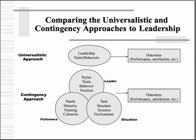You look at the leader — the styles, the traits, the behaviors, and also position power. You look at the followers: what are their needs, what is their maturity, what is their training, what is the cohesion among the followers. And then you look at the situation, which includes things like the environment, the systems, the tasks, the structure. All of those work together in a very dynamic process in order to get the outcomes that you want. It is not a simple 'do this and get that' kind of approach.